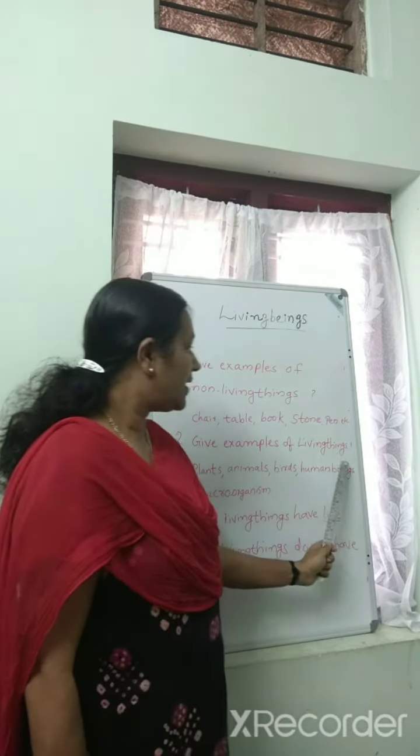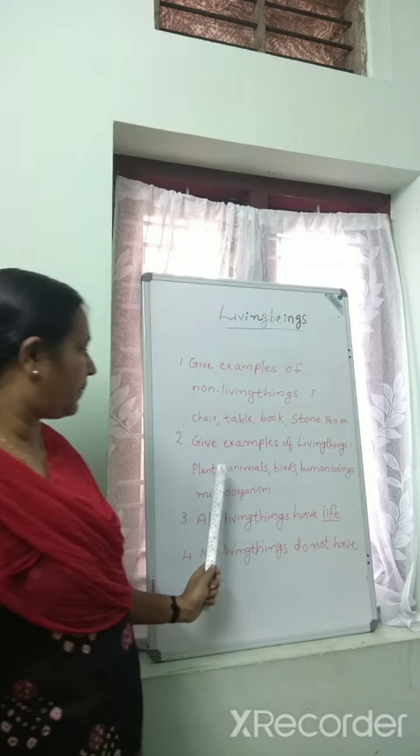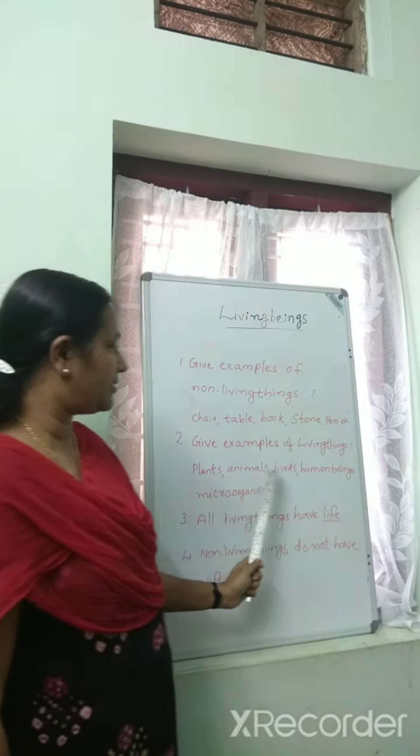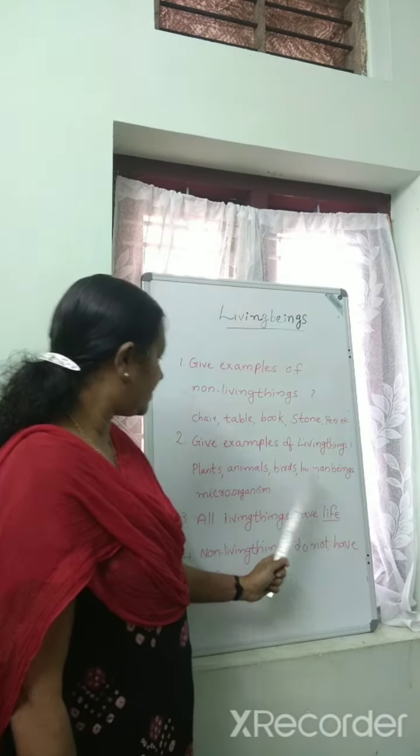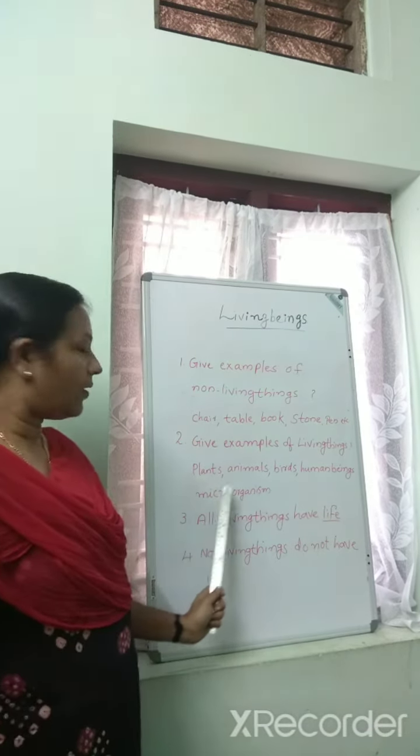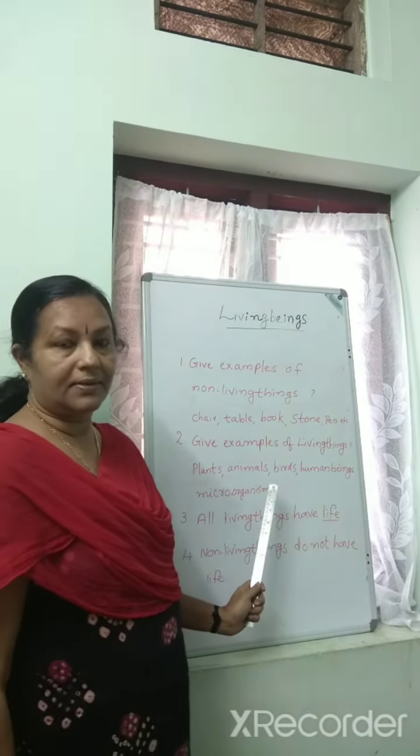Second question: Give examples of living things. Plants, animals, birds, human beings, micro-organisms.